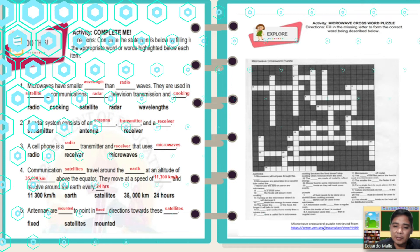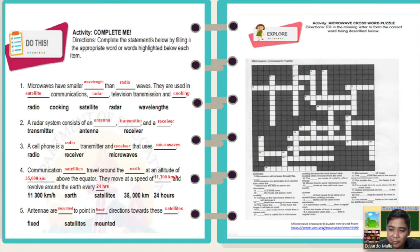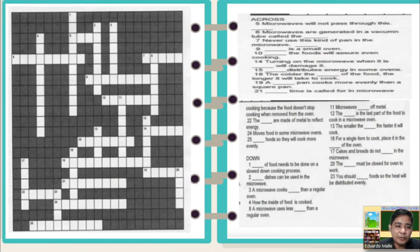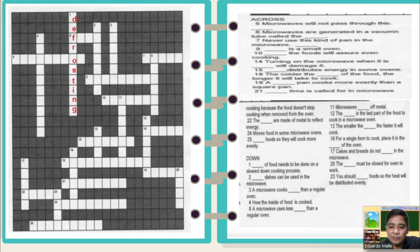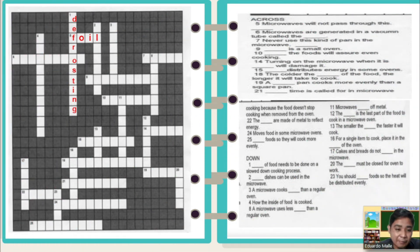Let us now proceed to the next activity: the Microwave Crossword Puzzle. As you can see, there are questions at the lower part. You are going to answer those questions and put your answers in the puzzle. For example, in the down direction: blank of food needs to be done on a slowed-down cooking process — the answer is 'defrosting.' In the across direction, number five: microwaves will not pass through this blank — foil. Another sample answer: turntable. The remaining blanks are your responsibility.